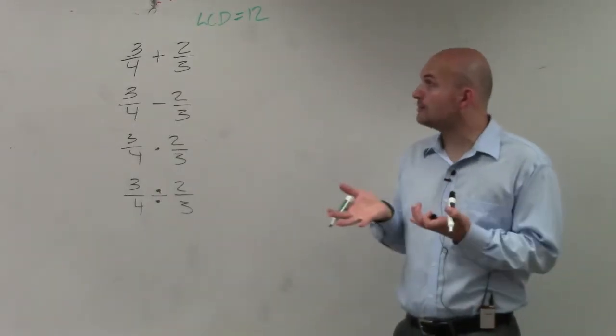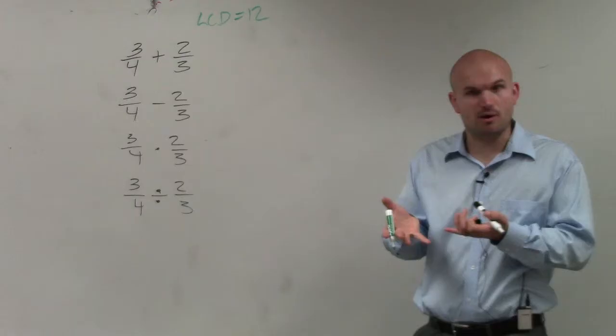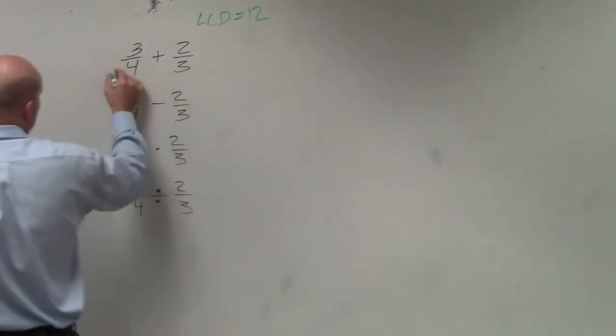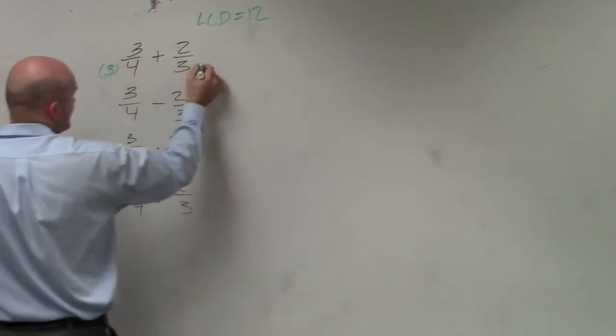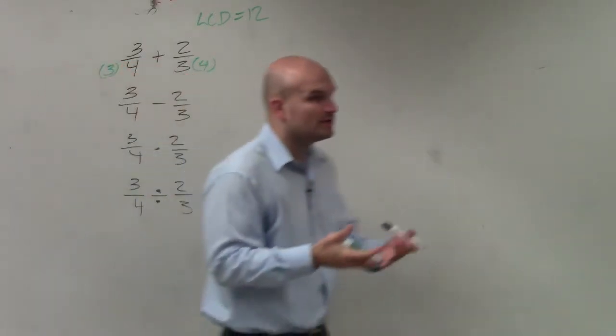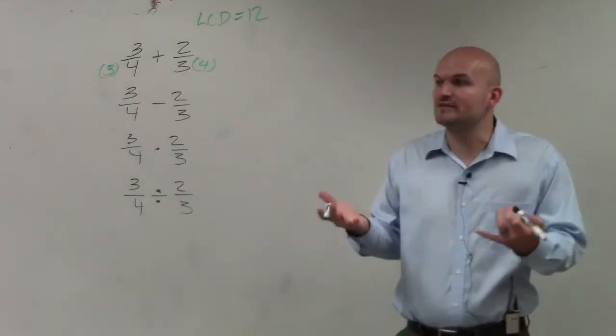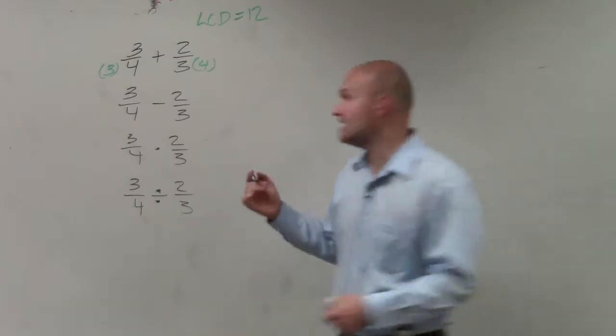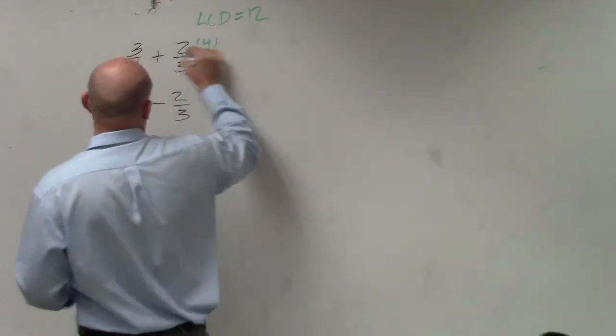So now what we need to do is get our denominators both to be 12. To get 4 to be 12, we'd multiply by 3. And to get 3 to be 12, we'd multiply by 4. However, we want to produce what we call equivalent fractions. So we're not just going to multiply our denominators. We have to multiply the top and the bottom.